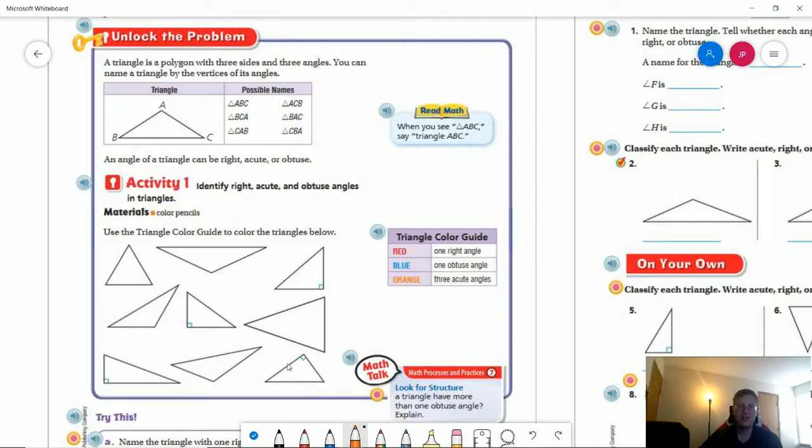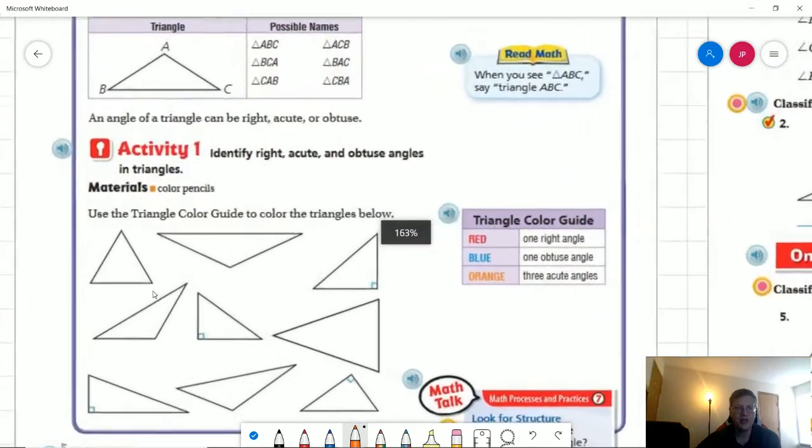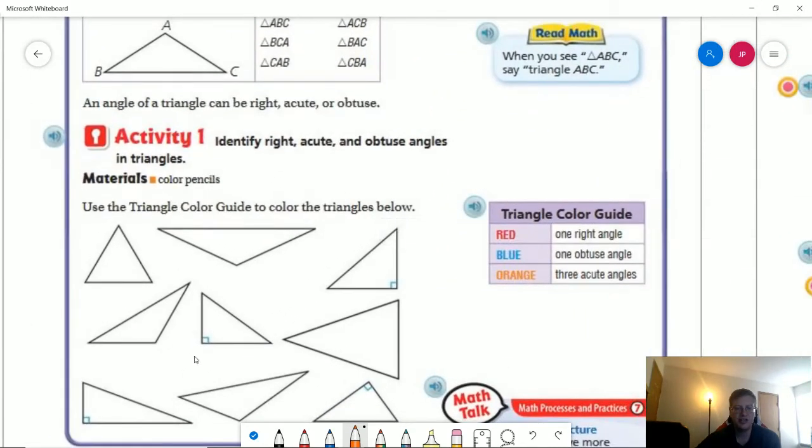And if we have an obtuse angle, which is an angle that is going to open up to larger than 90 degrees, then that is going to give us an obtuse triangle. So we are going to use that information as we go through our lesson. So to start with, let's find all of our orange ones. So these are the ones that all have angles that are smaller than 90 degrees.